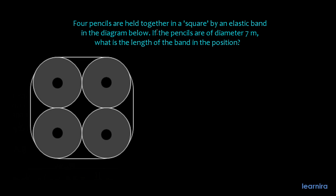This problem involves four pencils held together in a square by an elastic band. We are told that the pencils are of diameter 7 centimeters. If the diameter of the pencil is 7 centimeters, it means the radius will be half the diameter.